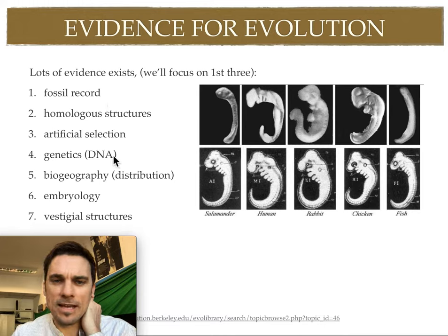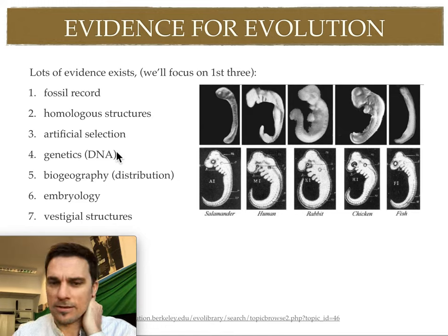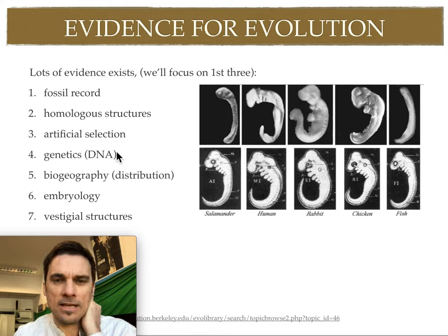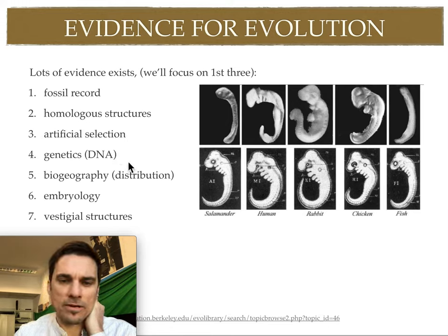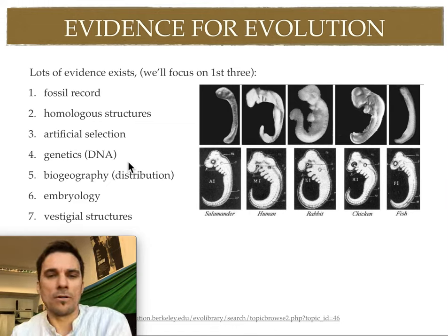DNA evidence has really crushed it in terms of showing us definitive links in our DNA to other species. By looking at the repetitions of A's, T's, G's, and C's in our DNA, we can get into that as well — but that's probably for another lesson, another unit all to itself.